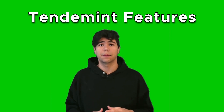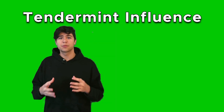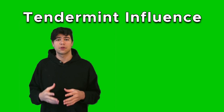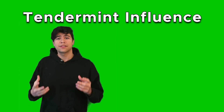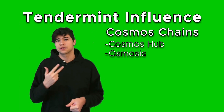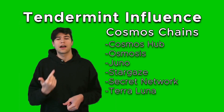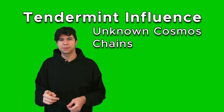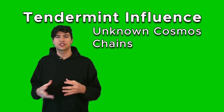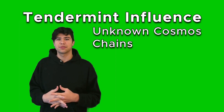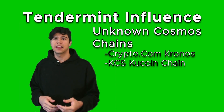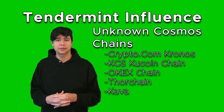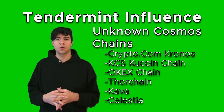Most people don't know how widely Tendermint is used. Projects that directly use Tendermint and are proud of it include Cosmos Hub, Osmosis, Juno, Stargaze, Secret Network, Terra Luna, Akash, Umee, Injective, and Crescent. Then there are projects that use Tendermint but people don't really know it — exchanges and enterprises love Tendermint, such as the Crypto.com chain, Cronos, KuCoin chain, and OKEx. ThorChain and Kava are older Cosmos projects, and Celestia focuses on data availability for modular blockchains.